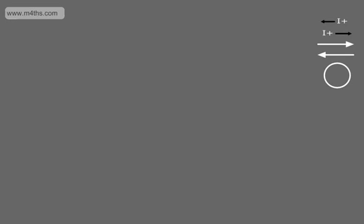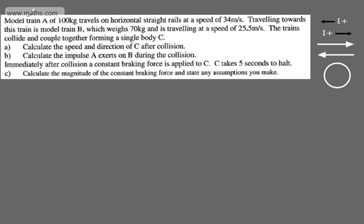In this video, we're going to do another exam-style question on impulse and momentum. We're told Model Train A of 100kg travels on horizontal straight rails at a speed of 34 m/s. Travelling towards this train is Model Train B, which weighs 70kg and is travelling at a speed of 25.5 m/s. The trains collide and couple together, forming a single body C. In Part A, we're asked to calculate the speed and direction of C after the collision. In Part B, we're asked to calculate the impulse A exerts on B during the collision.